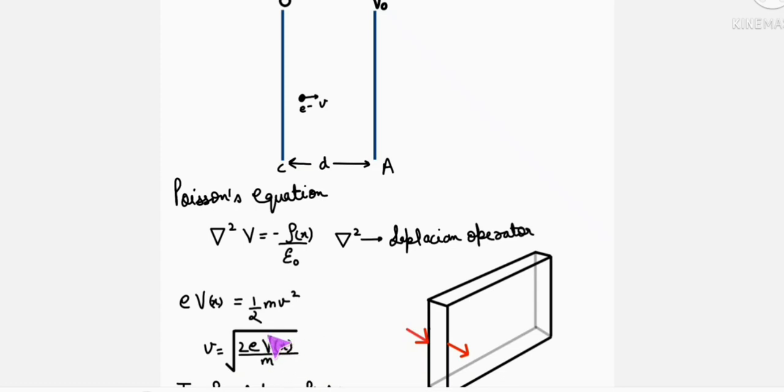Now this V, like we write in a capacitor, is V0 by D into X. This V is not that V we write when there is no space charge. In this case, the charges are present in between these plates also, so definitely this V is not that V0 D by X.